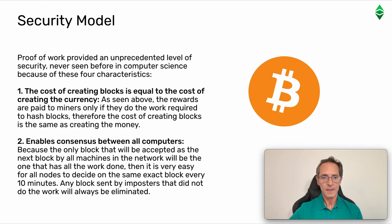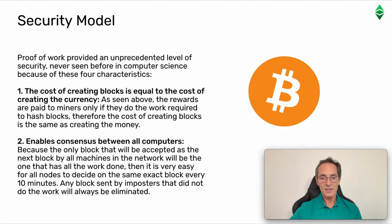Security model. Proof of work provided an unprecedented level of security, never seen before in computer science, because of these four characteristics. One: the cost of creating blocks is equal to the cost of creating the currency. The rewards are paid to miners only if they do the work required to hash blocks; therefore, the cost of creating blocks is the same as creating the money. Two: enable consensus between all computers. Because the only block that will be accepted as the next block by all machines in the network will be the one that has all the work done, it is very easy for all nodes to decide on the same exact block every 10 minutes. Any block sent by imposters that did not do the work will always be eliminated.